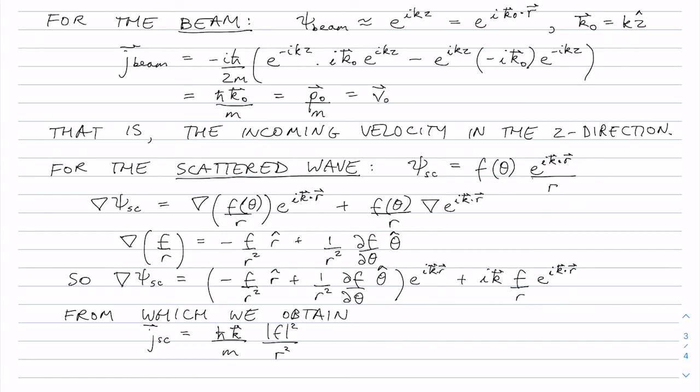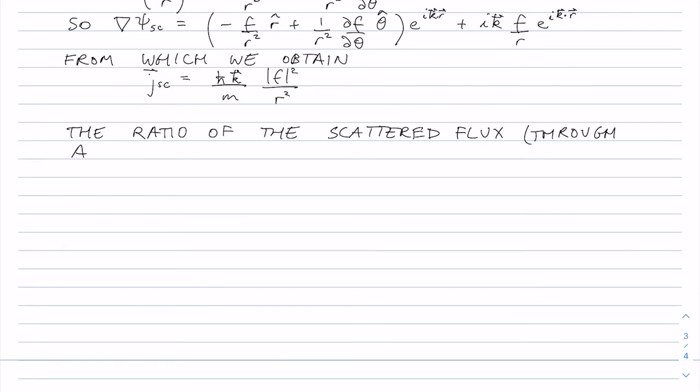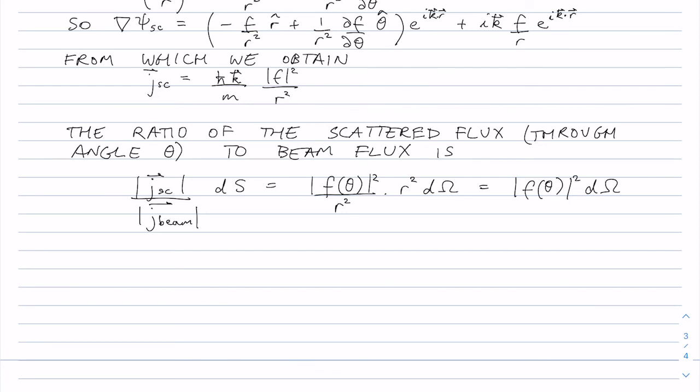So we've got a scattered flux and a beam flux and the ratio of the fluxes is. So this is the differential cross section itself and it's, we haven't really put in any physics yet so this is still just about the geometry.